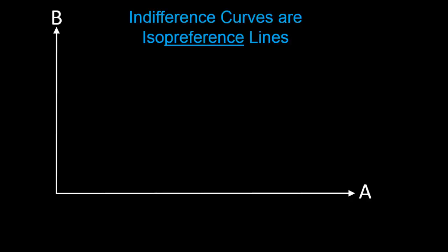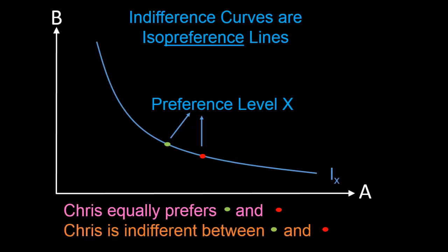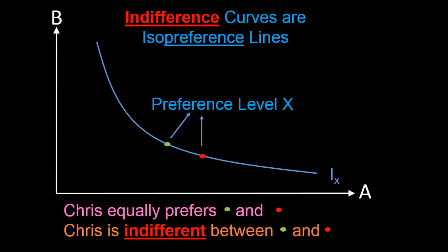Let's now take a look at what indifference curves are. This is our usual graph. A typical example of an indifference curve is something like this — this is an indifference curve that I've labeled ix. It consists of precisely those bundles which have a preference level of x. So if I pick any two bundles on this indifference curve — for example this green bundle and this red bundle — the two of them are going to have a preference level of x. We can say that Chris equally prefers the two of them, or that Chris is indifferent between the green and red bundles. And this is where the name 'indifference curve' was derived.